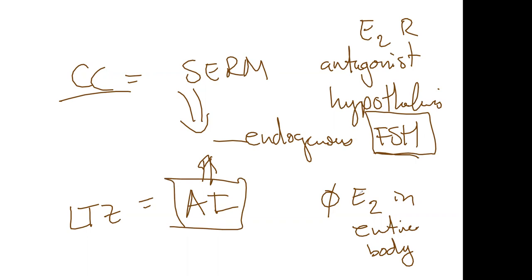Whereas the aromatase inhibitor drops the amount of estrogen in the body, the brain senses that drop in estrogen and then pours out a little more FSH. Those are the differences in the mechanism of action.